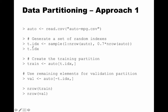Now we can use that vector as an index into the data. We say train is auto[t.idx, ] — the comma with blank means we want all columns. So train contains only those rows in auto corresponding to these indexes. Then we do the validation partition as everything else: auto[-t.idx, ]. After this you can check the number of elements in training and validation using nrow.